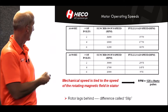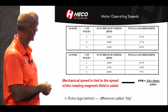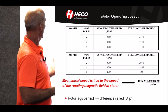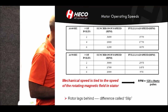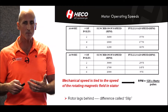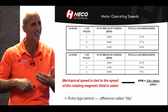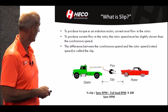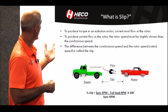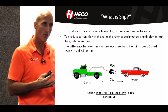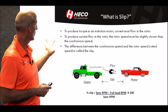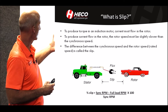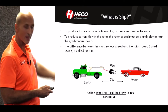Basic operating speeds go beyond this, but based on the number of poles: two-pole is 3,600 RPM, four-pole is 1,800, six-pole is 1,200. Full load speed RPM is going to be slightly less. The rotor is lagging behind the stator, so there's a slip involved. To produce torque in an induction motor, current must flow in the rotor. To produce that current flow, the rotor must be slightly slower than synchronous speed. The difference between synchronous speed and rotor speed is called slip, and it's calculated by that formula.